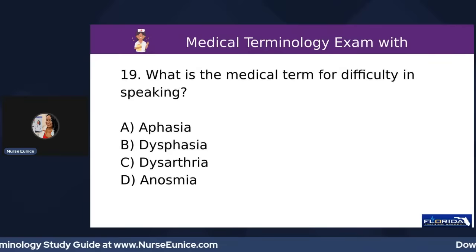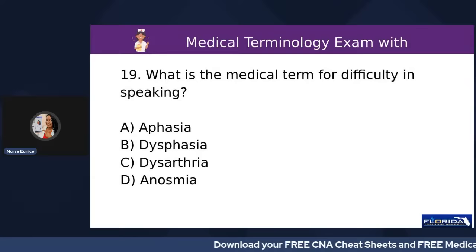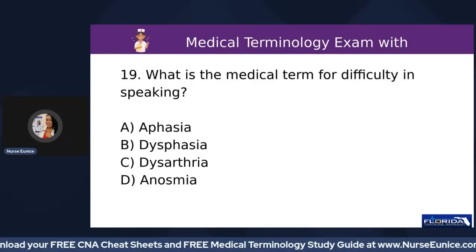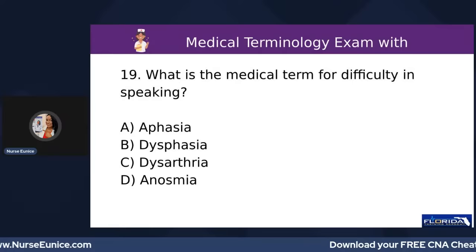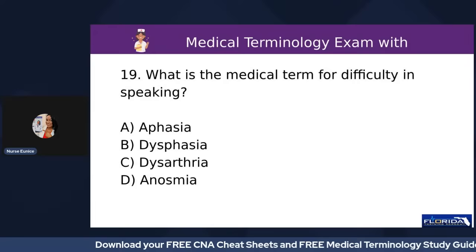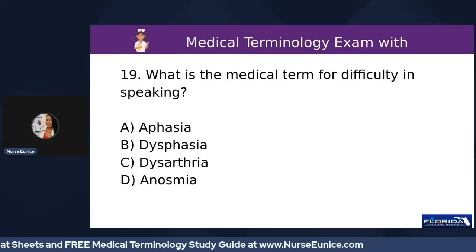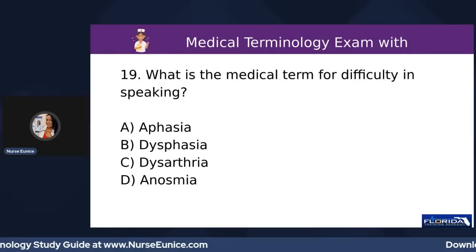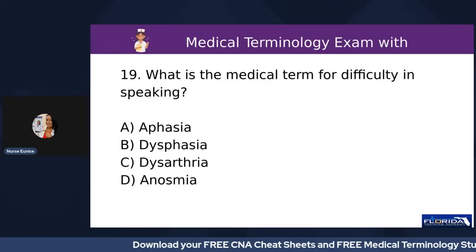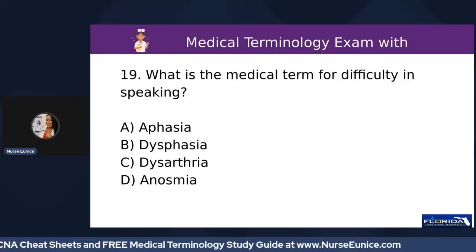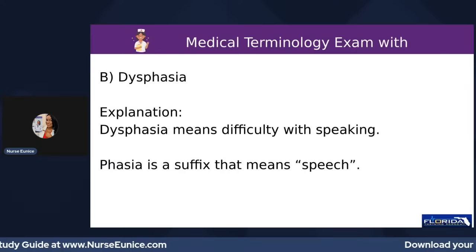Number nineteen: what is the medical term for difficulty in speaking? A) aphasia, B) dysphasia, C) dysarthria, or D) anosmia. When 'a' is in front of a medical word, it means the absence — so with aphasia, the person can't speak at all. The answer is B, dysphasia — difficulty in speaking. Remember, dysphagia was difficulty in swallowing; dysphasia is difficulty in speaking.